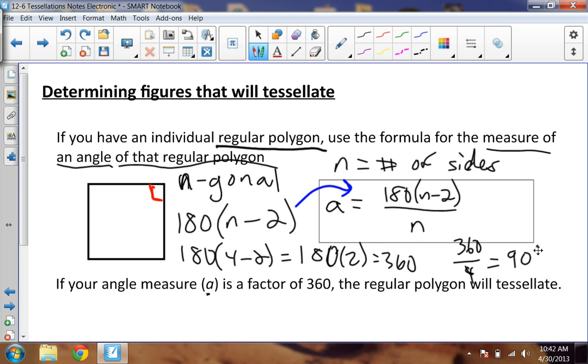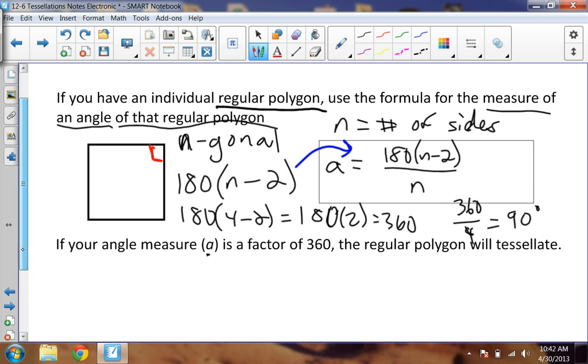Okay, so 90 degrees is the measure of one angle of this regular polygon. If that angle measure, which is A, is a factor of 360, the regular polygon will tessellate. So if I can do 360 divided by 90 and I get an integer out, like 4, then that means the polygon will tessellate. So I have to take 360 and divide it by 90. And if it becomes 4, if it becomes an integer or whatever it is, then it will tessellate.